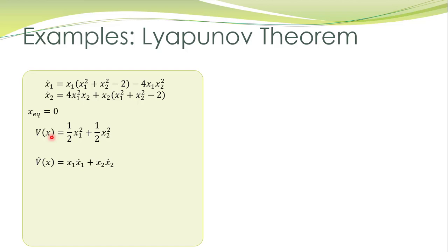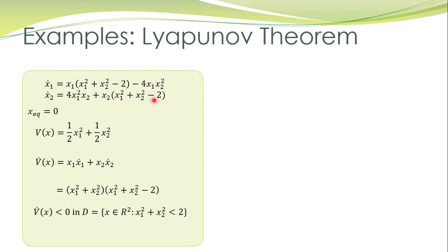We compute the derivative of this function along system trajectories. X1-dot is given here, X2-dot is given by its equation. We substitute these expressions and perform the calculations. We have omitted the substitution procedure — after substituting X1-dot and X2-dot and performing some arrangements, we get this expression. What about the definiteness of this function?